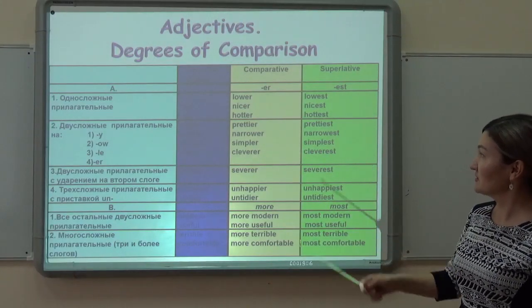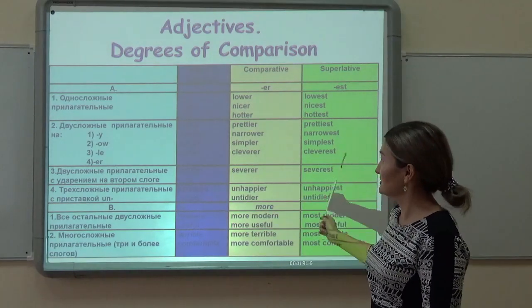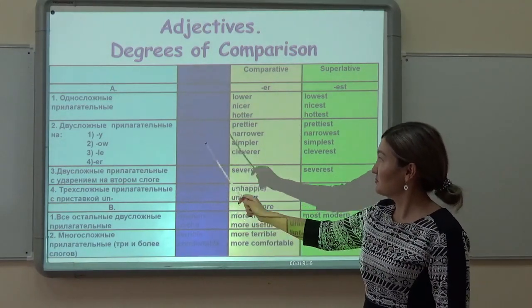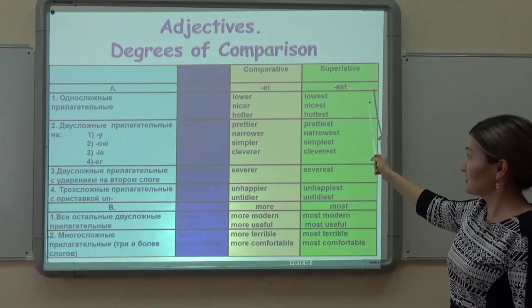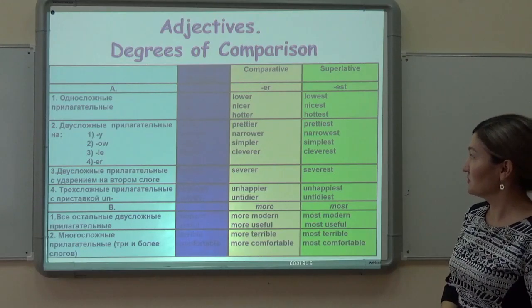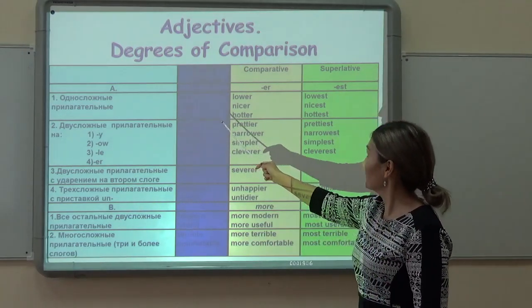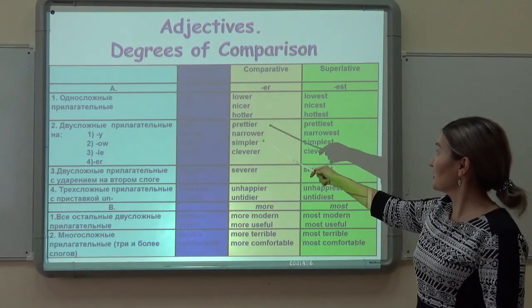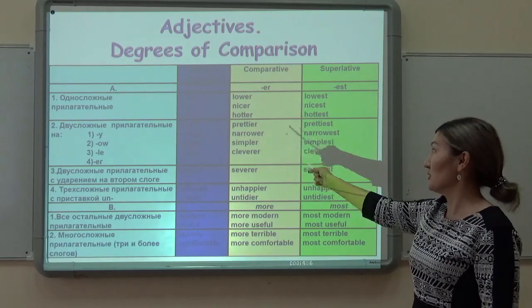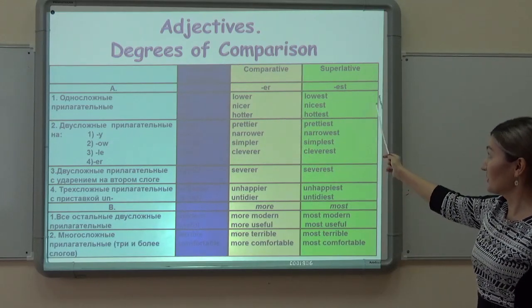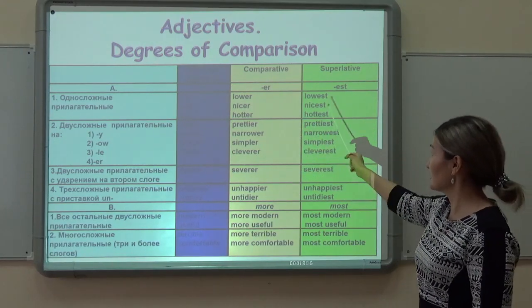Let's have a look at this table. As I said, our adjective has three types: the first is positive, the next is comparative, and the last is superlative degree. Let's take the adjective 'low.' In order to compare it, we add the suffix -ER. For example: low, lower. And to make the superlative degree, we add suffix -EST. For example: low, lower, the lowest.